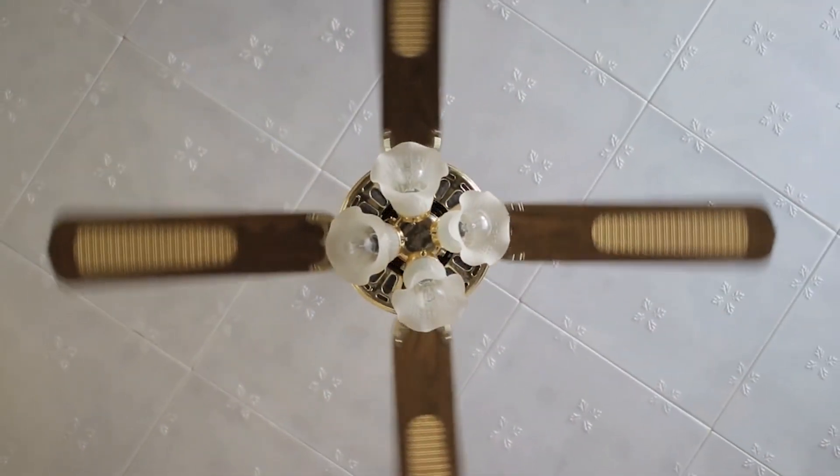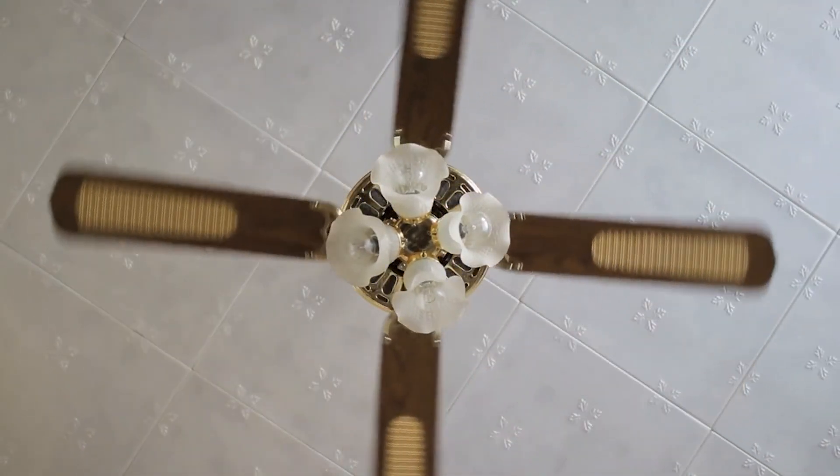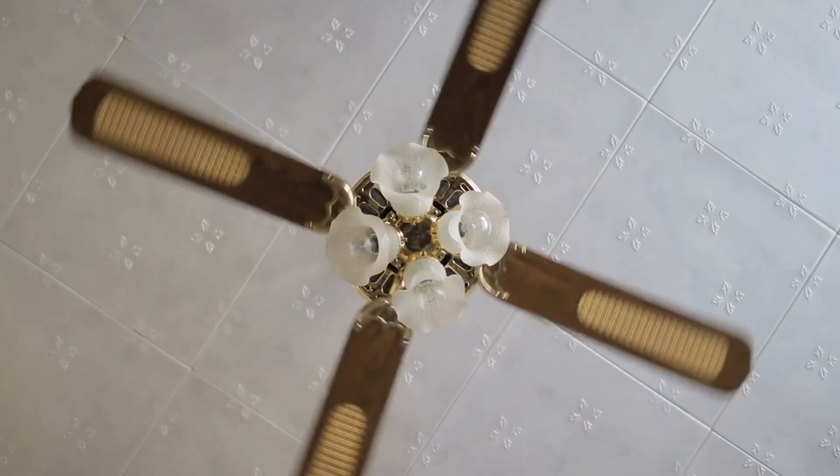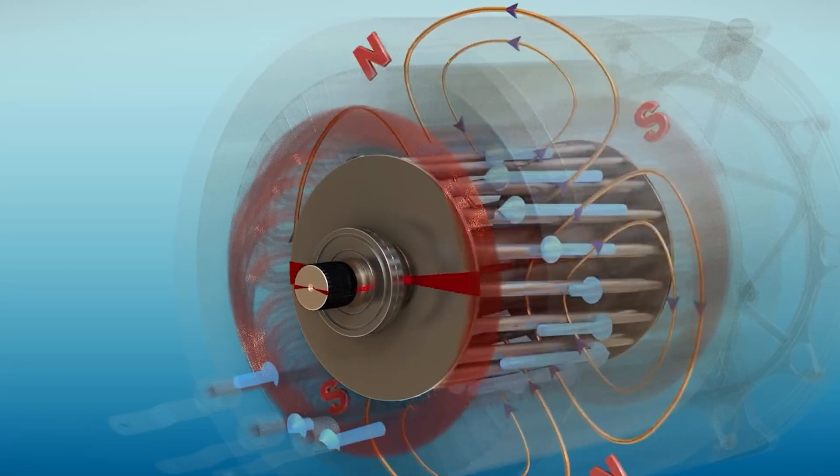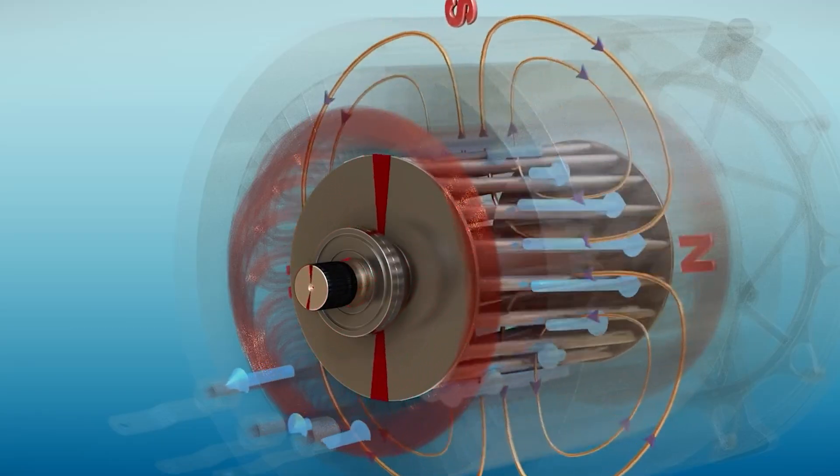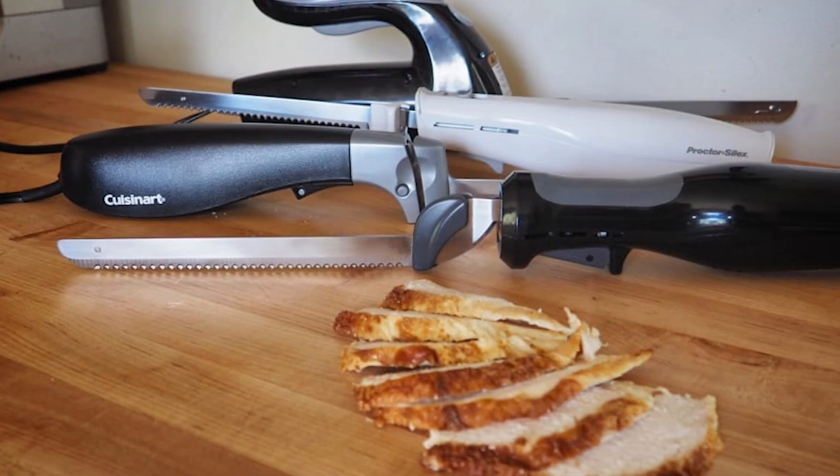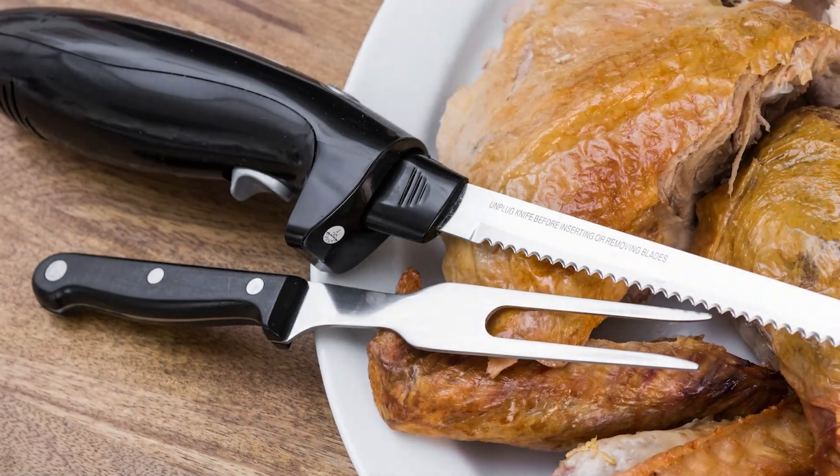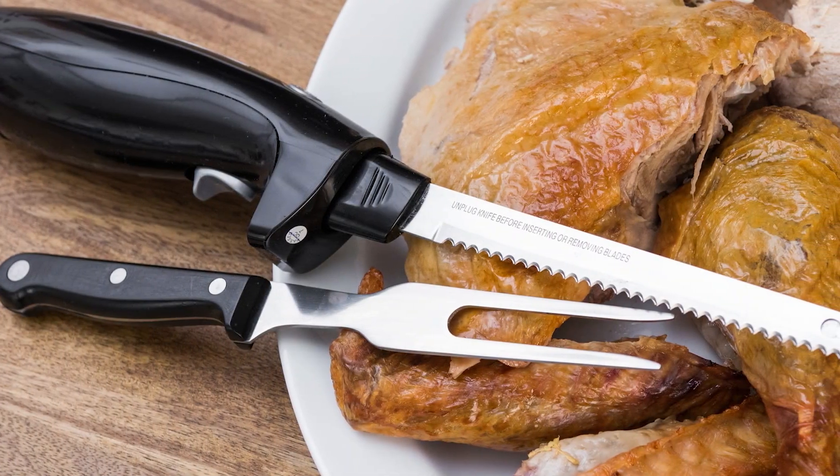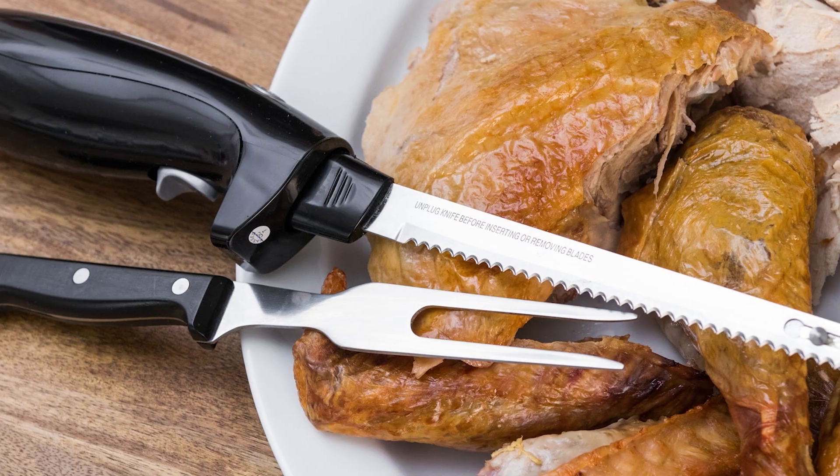For example, fans use motors to spin blades and circulate air. Without motors, we wouldn't have the cooling relief that fans provide on a hot day. Similarly, toys use tiny motors to move wheels or make parts spin. Even the electric knives we use in the kitchen depend on motors to make their blades move back and forth, slicing through food with ease.